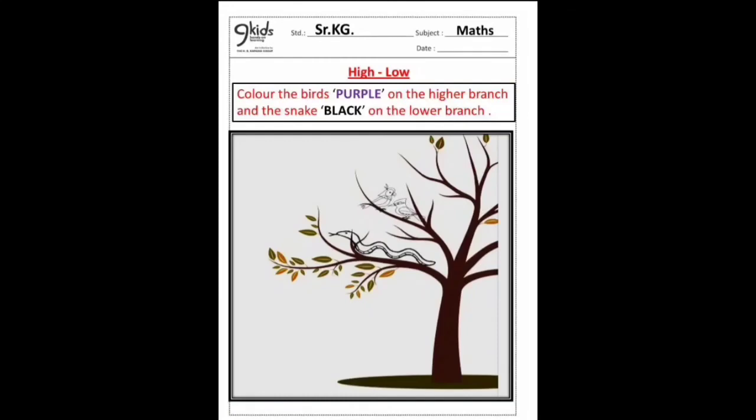Now, this is the second worksheet. What can you see on the tree? Two birds are sitting on higher branch and the snake is sitting on the lower branch of the tree. Now, you have to color the birds purple on the higher branch and the snake black on the lower branch.